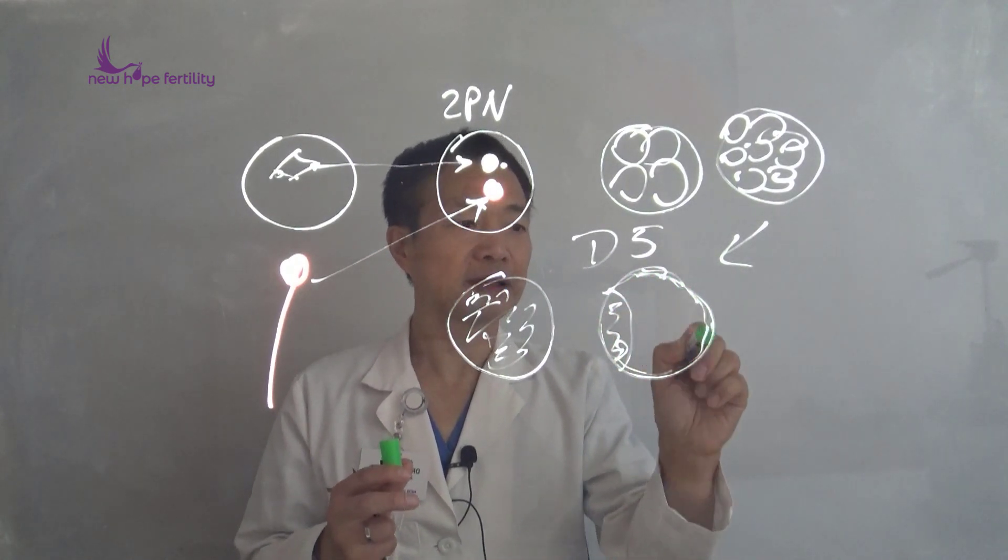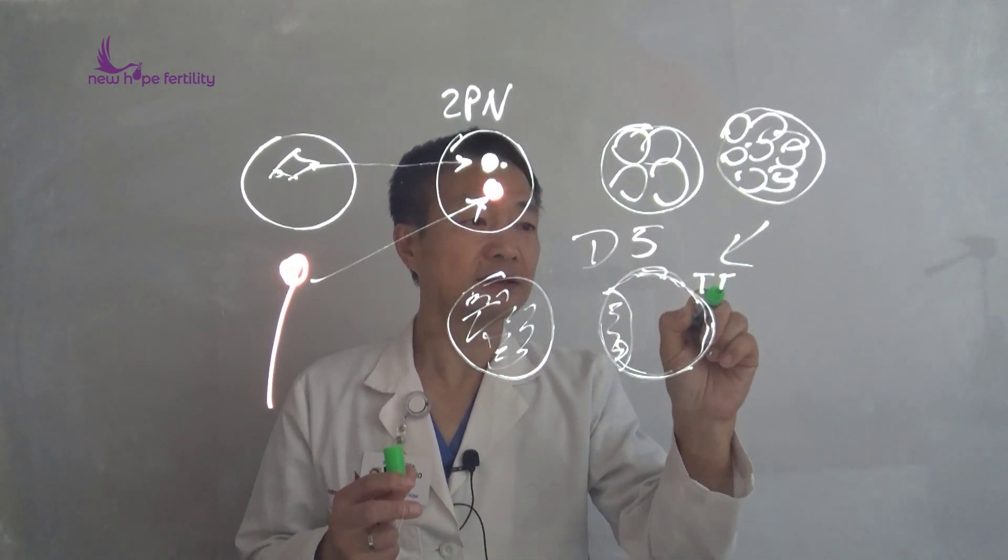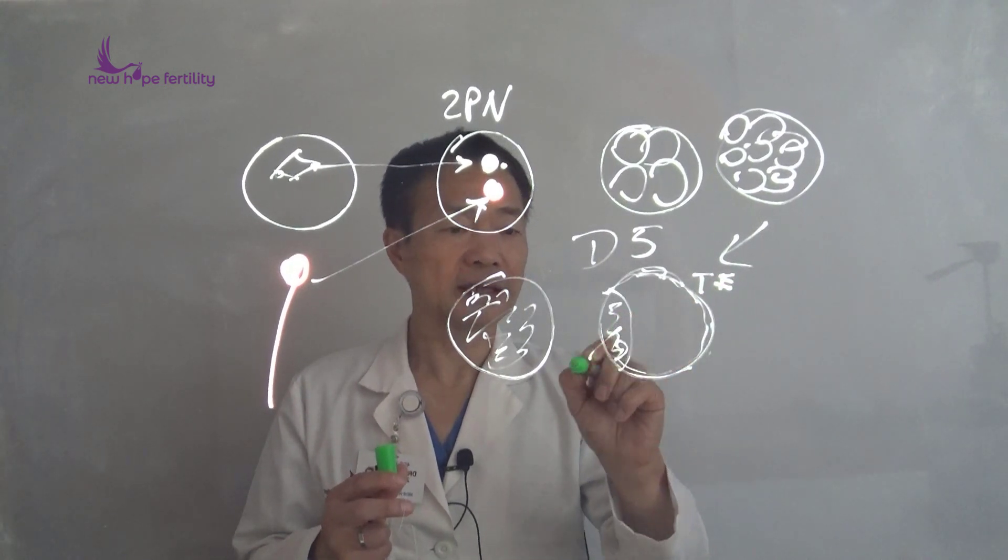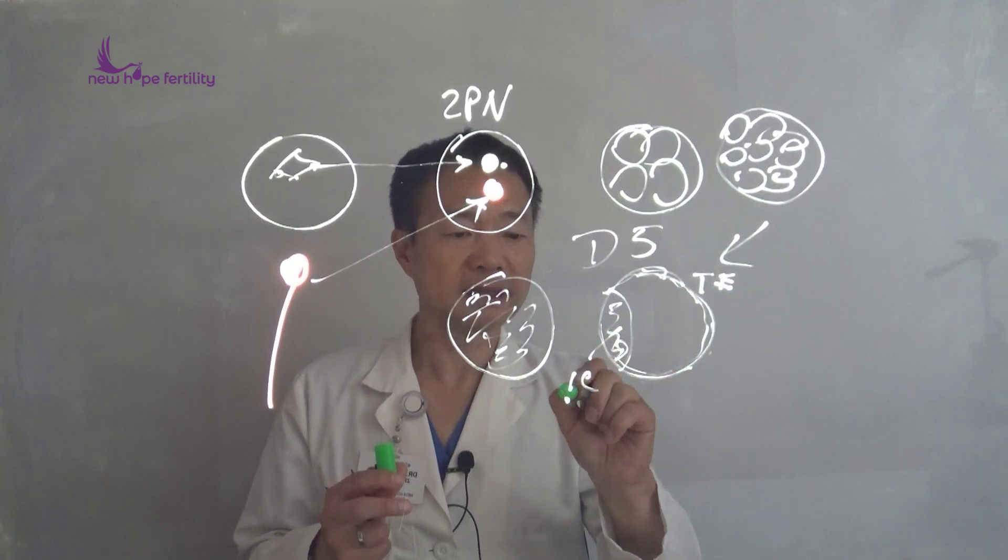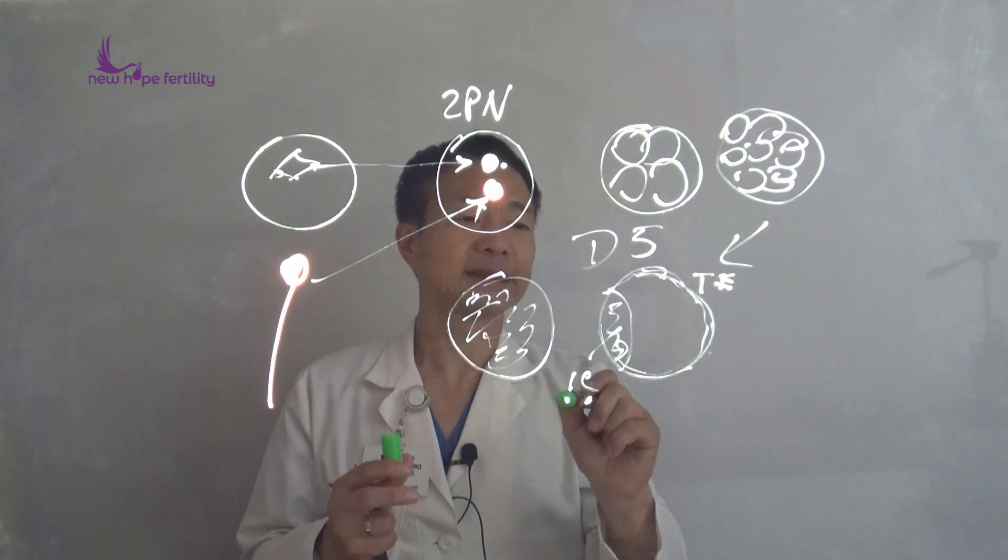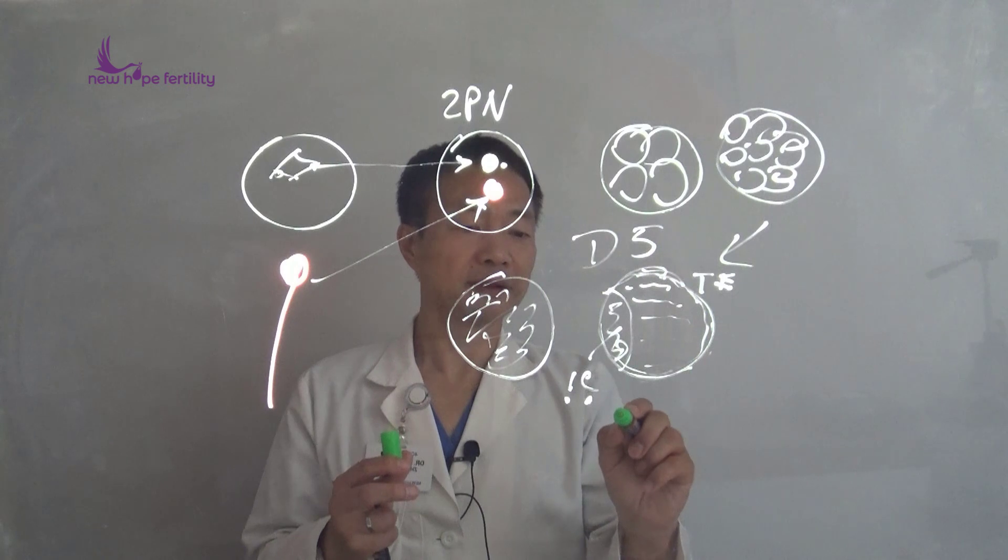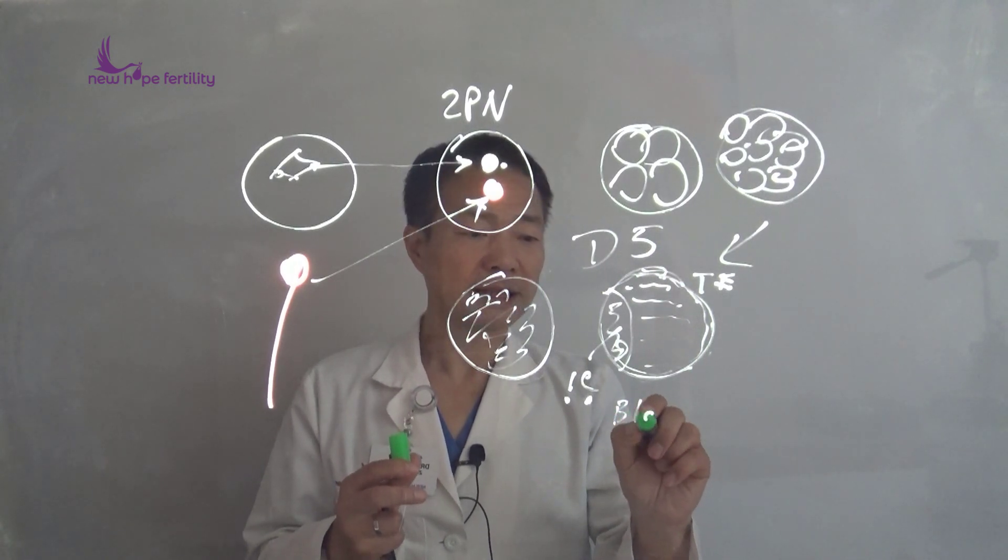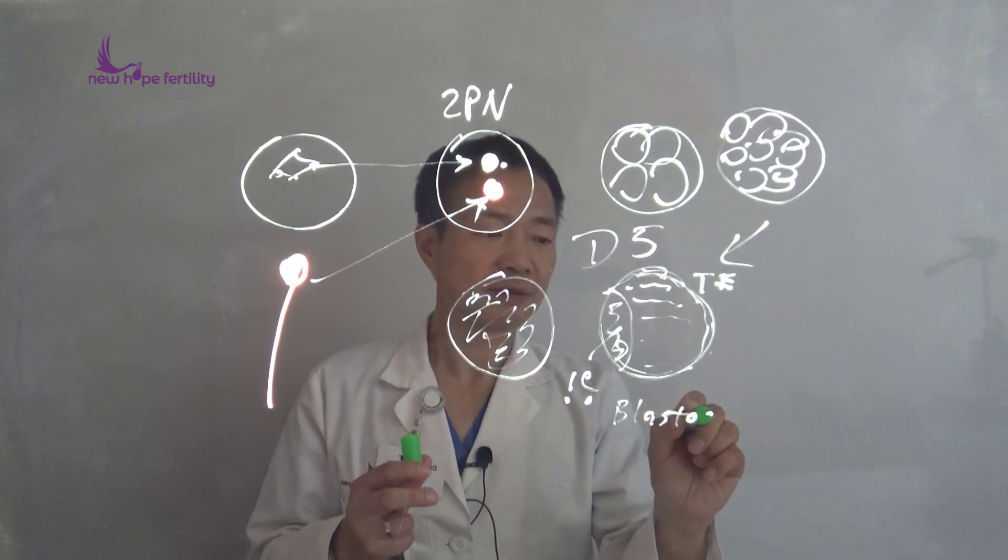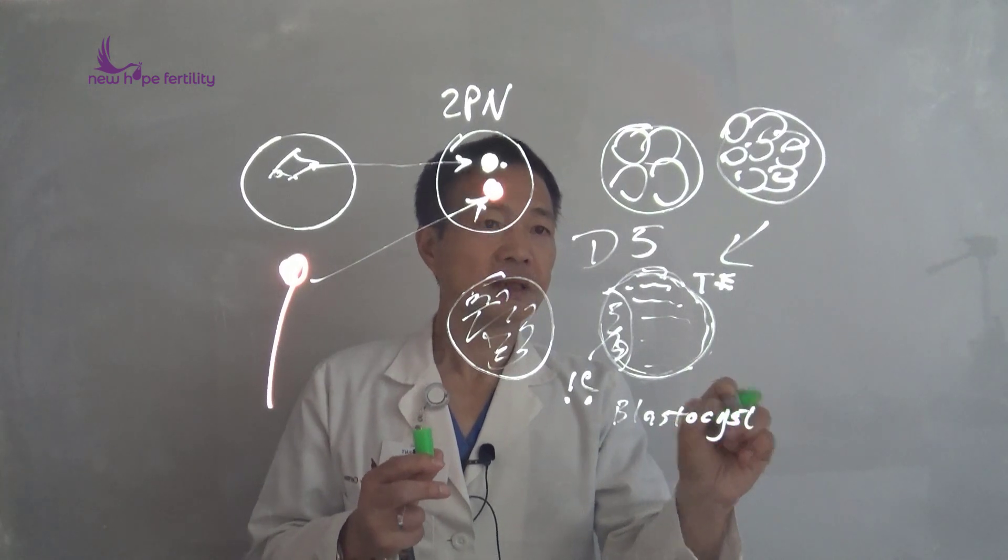These are called trophectoderm cells, or T cells. This is called the inner cell mass, and this fluid cavity. This is called a day 5 embryo—sometimes we call it a blastocyst stage embryo.